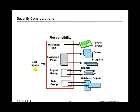If another user logs in using the eastern region responsibility, by the fact that the eastern region responsibility is tied to the eastern region operating unit, the view definition is set such that when the user tries to access the forms, the data they see will only be associated with the eastern region. The western region data would be hidden from those view definitions. Likewise, when someone runs reports, by the fact that the responsibility is tied to that operating unit, the reports are generated based on that specific operating unit.